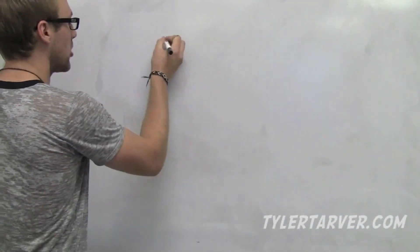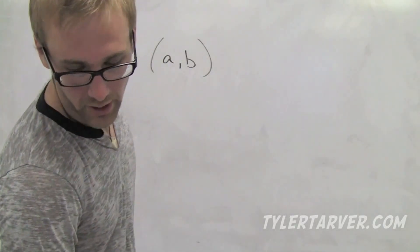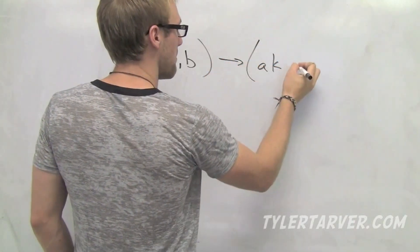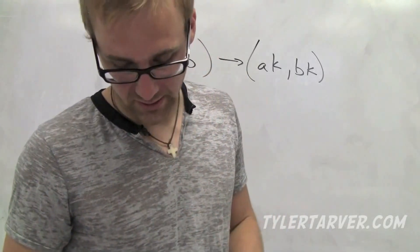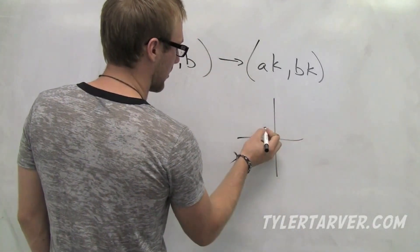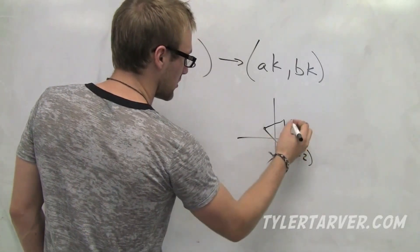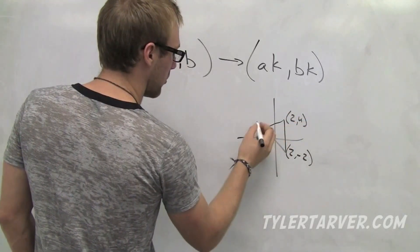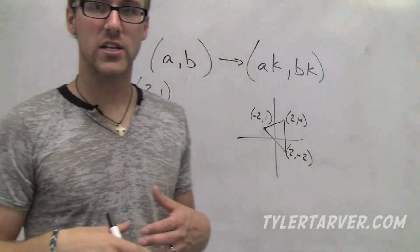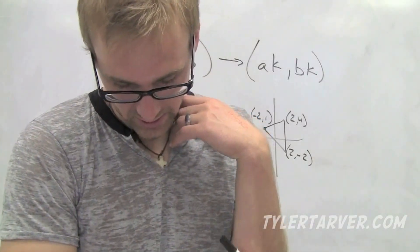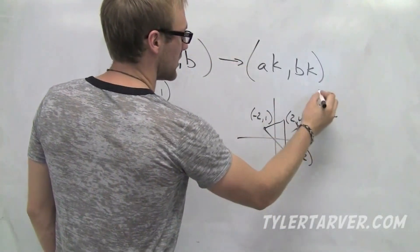In the coordinate plane, if we have coordinates A and B, that's where the point is located. When we apply a dilation, it becomes A times K and B times K — K is what we're changing it by, whether it's a fraction like 2, 3, or 5 over 6. For example, let's make a triangle with vertices at (2, negative 2), (2, 4), and (negative 2, 1), and apply a scale factor of 3 over 2.